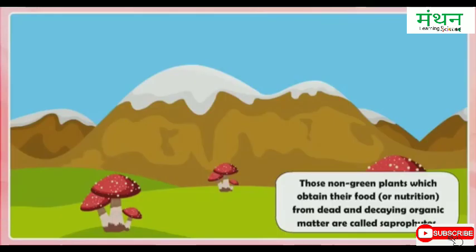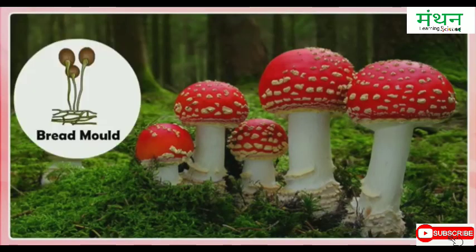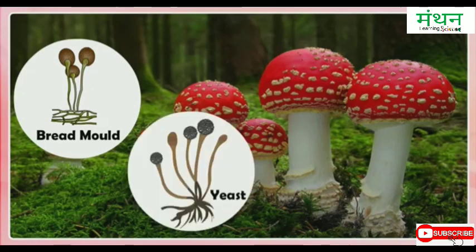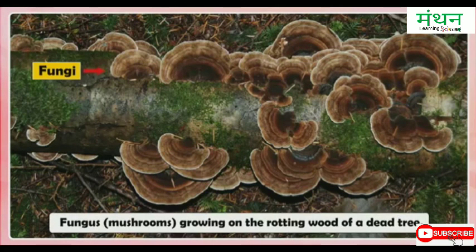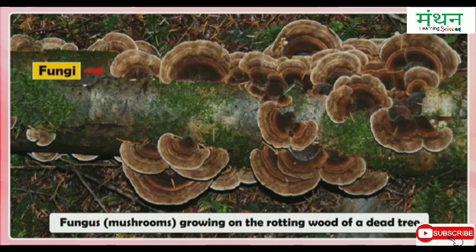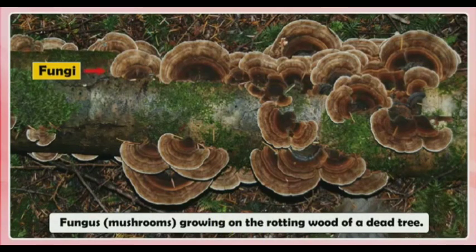Saprophytes. Non-green plants which obtain their nutrition from dead and decaying organic matter are called saprophytes. Fungi such as mushrooms, bread mold, and yeast are saprophytes. Saprophytic plants like fungi secrete digestive juices on the dead and decaying organic matter and convert it into a solution, then absorb the nutrients from this solution. This mode of nutrition is called saprophytic nutrition.